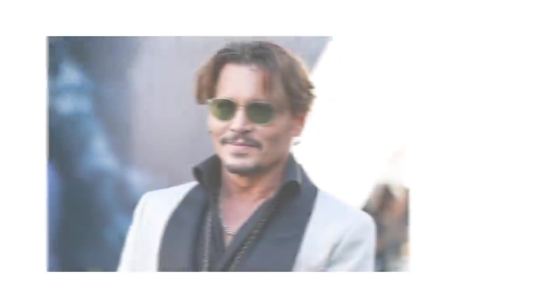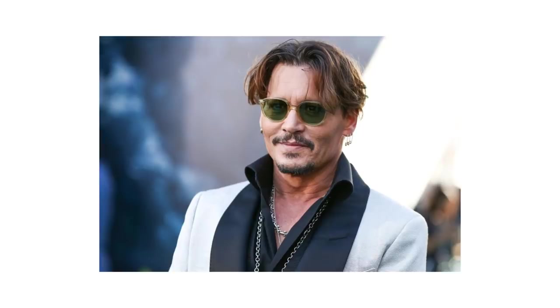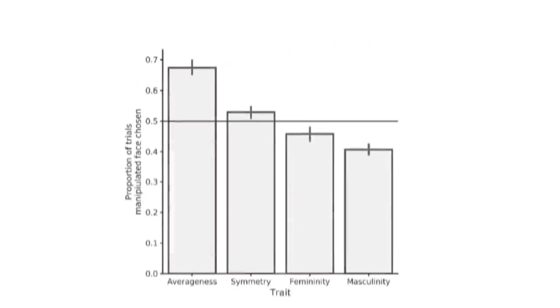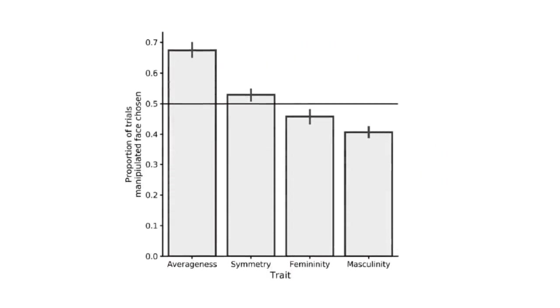Another experiment tested this theory to confirm it and, as it turns out, it still holds true today. This particular experiment manipulated symmetry, averageness and dimorphism of a face, and conducted a two-alternative forced-choice simulation where participants had to choose between the original or edited picture. As predicted, both the averaged and more symmetrical faces were preferred over the original. However, averaging the faces had the greatest effect on attractiveness, more so than symmetry.